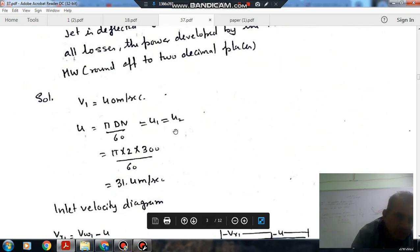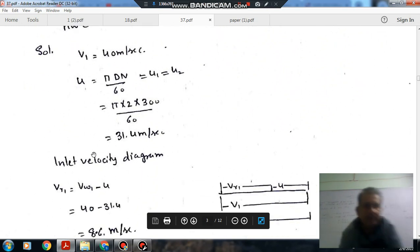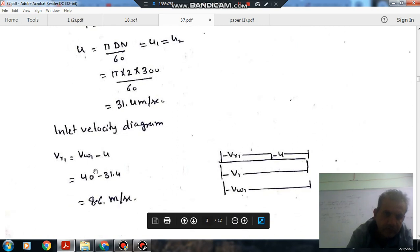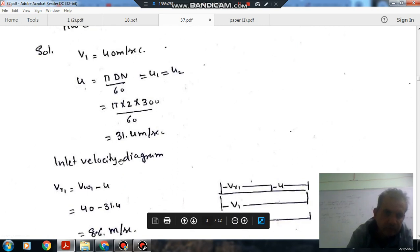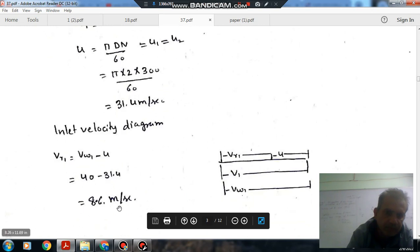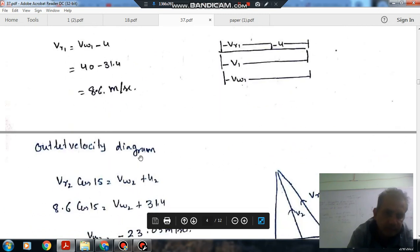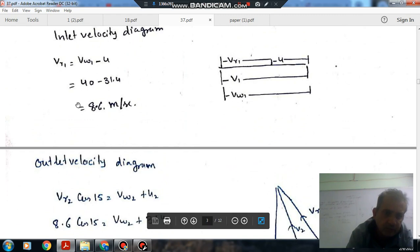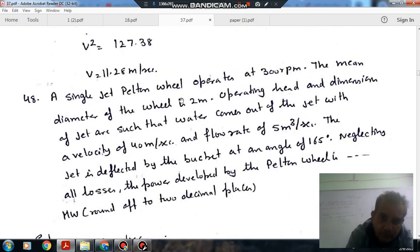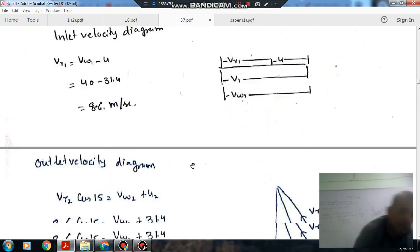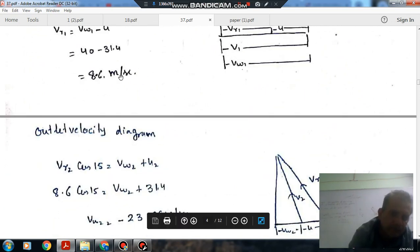Initial velocity is 40 m/s. In case of Pelton wheel, the inlet velocity of the wheel and outlet velocity of the wheel is the same, which equals πDN/60. With diameter 2 meters and N = 300 rpm, U = U1 = U2 = 31.4. The jet strikes the Pelton wheel. Vr1 is 40 - U = 40 - 31.4 = 8.6 m/s. This is the inlet velocity diagram. As there is no friction, Vr1 = Vr2.